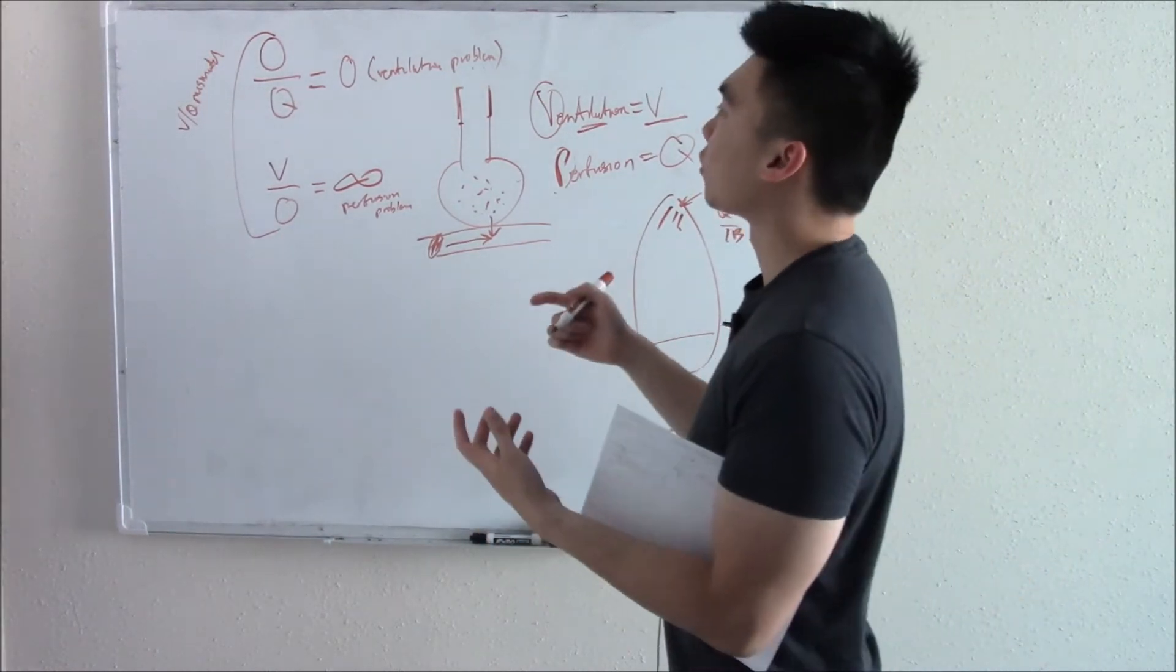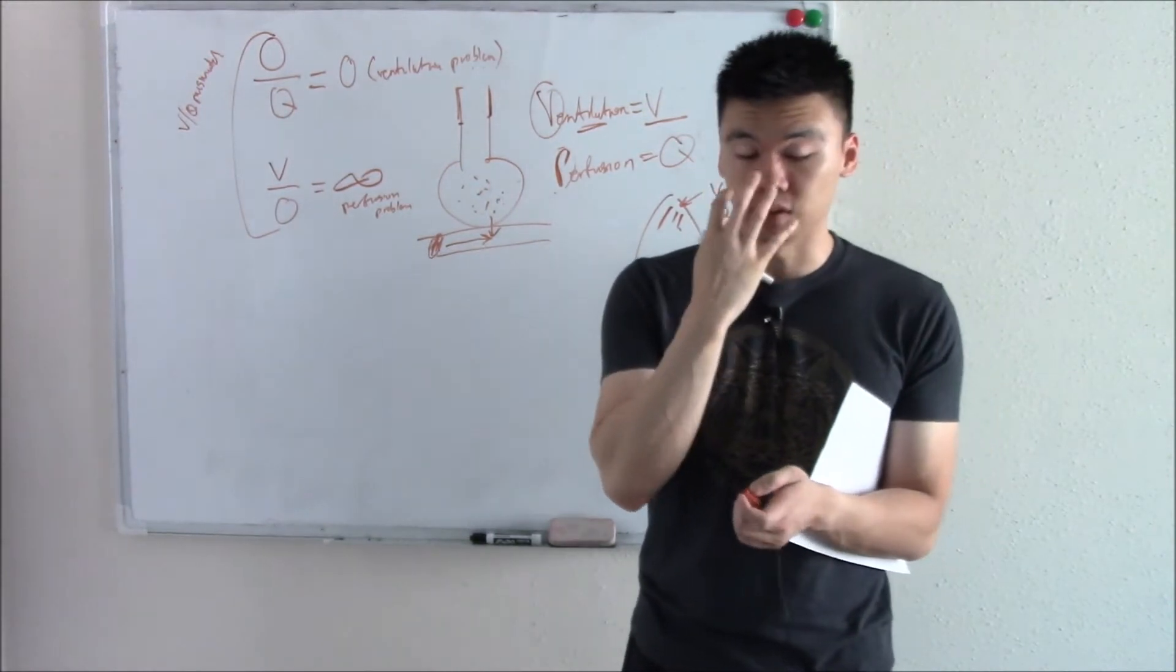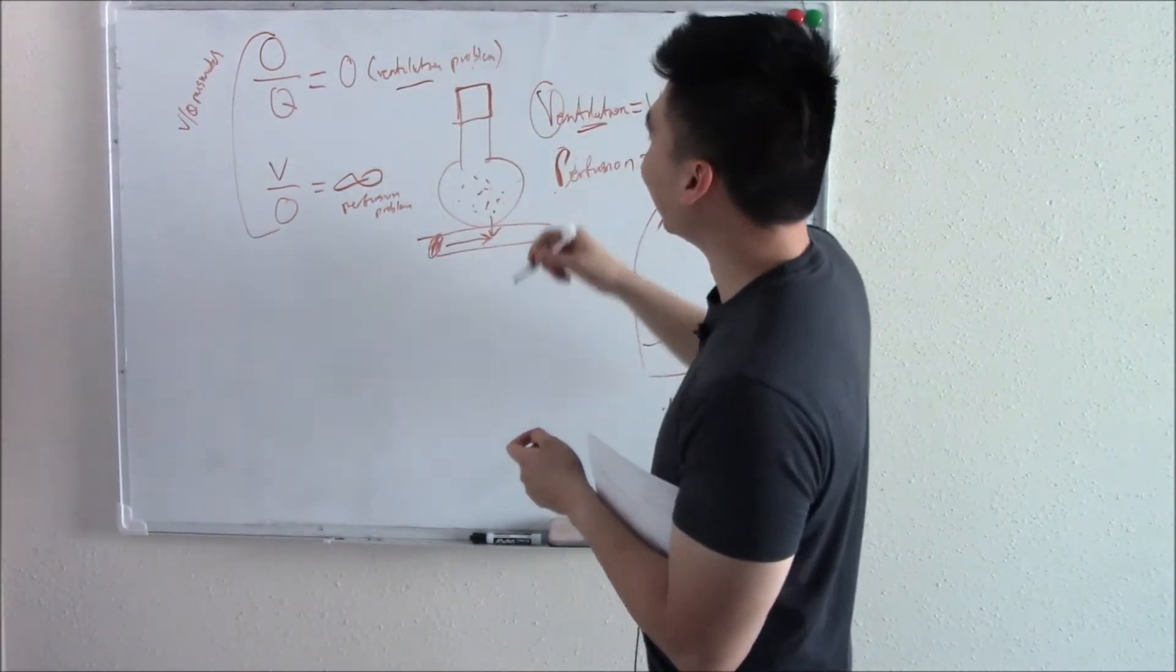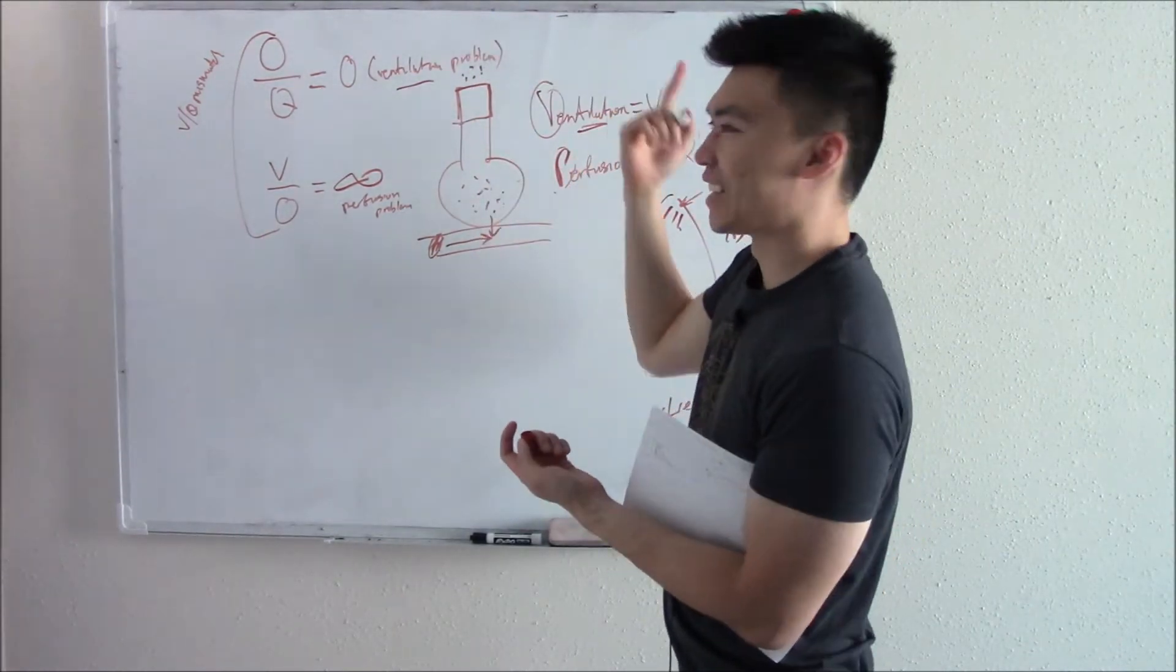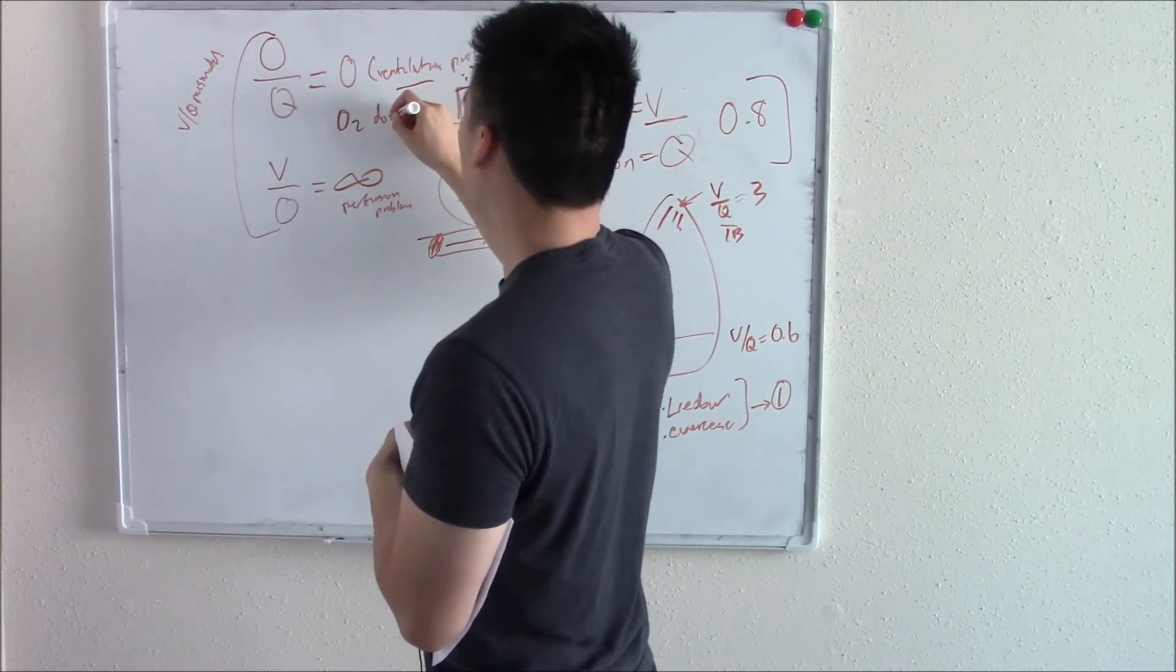Another way to differentiate between a ventilation problem and a perfusion problem is just give the patient oxygen. In a ventilation problem, if the kid swallowed a Lego and you give them oxygen, will it help? No, just hit that Lego. So O2 does not help.